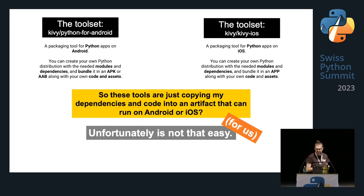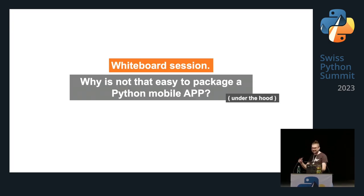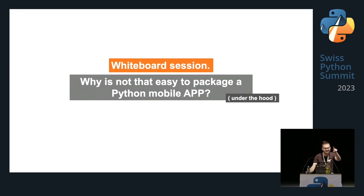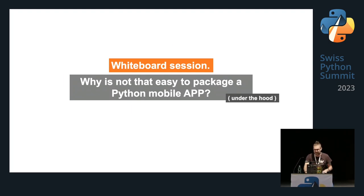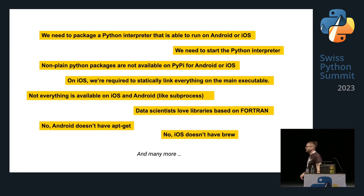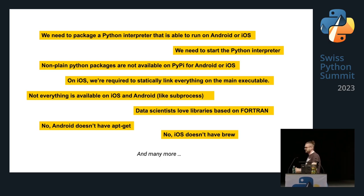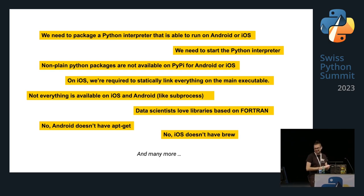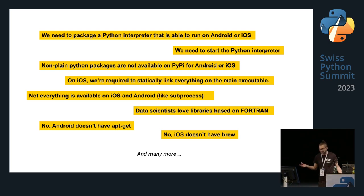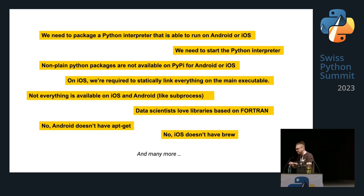Why is it not easy to package a mobile app? You can win a Kivy t-shirt! The answer is: you need to cross-compile. We need to package a Python interpreter that can run on Android or iOS, start that interpreter, handle that non-pure-Python packages aren't available on PyPI for Android or iOS, deal with static linking on iOS, handle missing features like subprocess on iOS, and cross-compile Fortran code for data science libraries. Android has no apt-get and iOS has no pip.